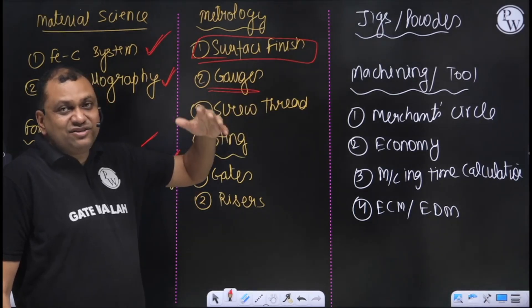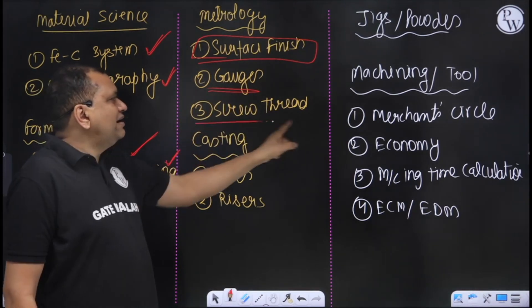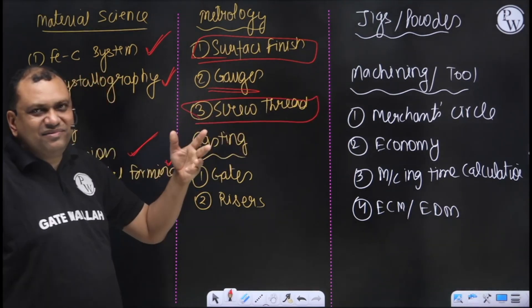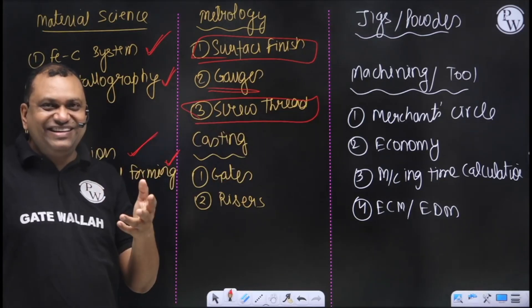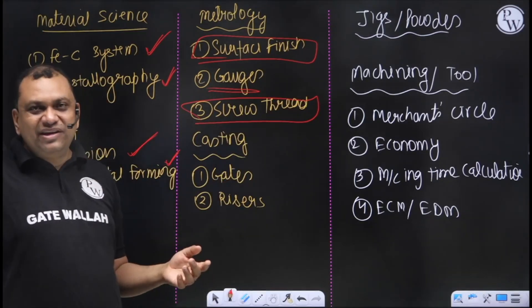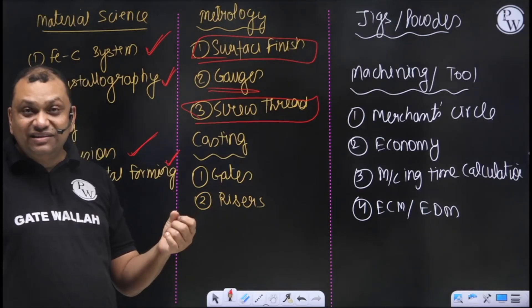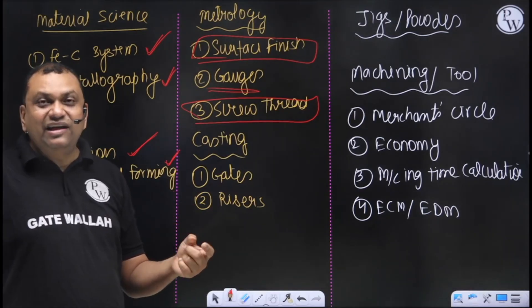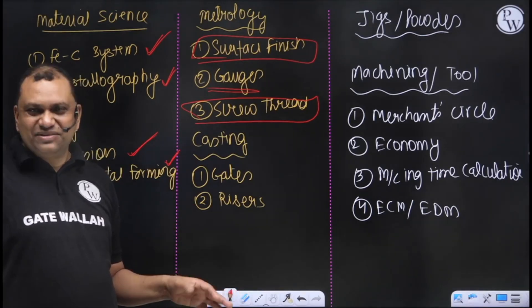Tolerance analysis of limit gauges - you should focus on that. And screw threads - it always appears, actually, alternate years. Primarily to calculate the effective diameter and the wire diameter. Wire diameter equals P by 2 sec theta - easy questions.